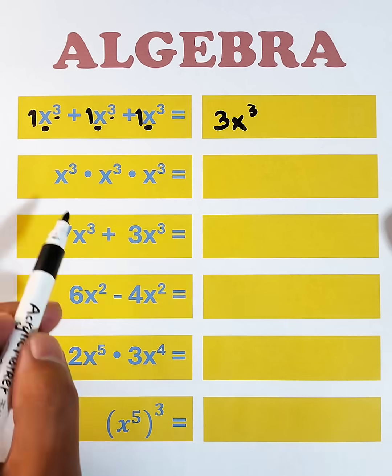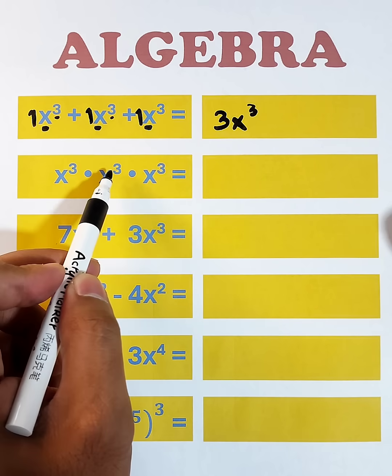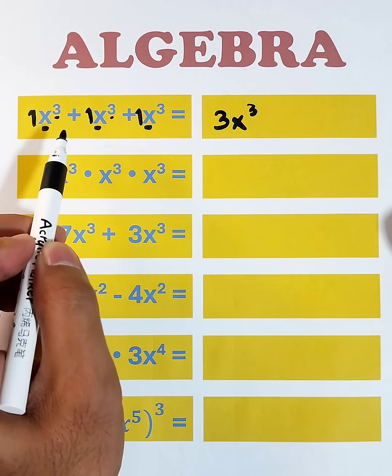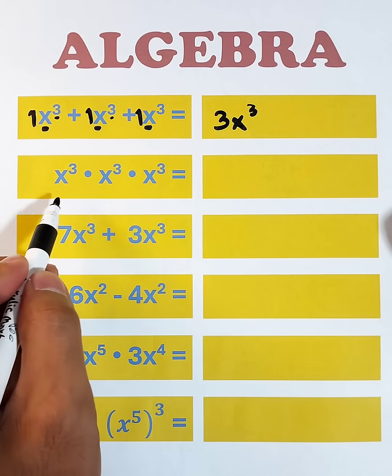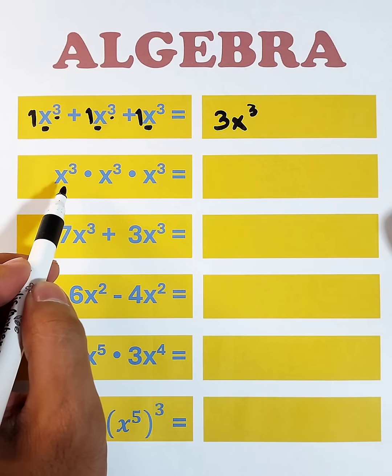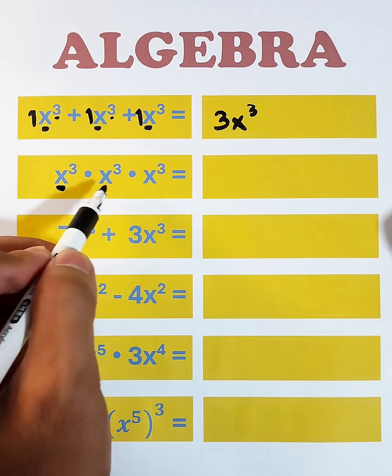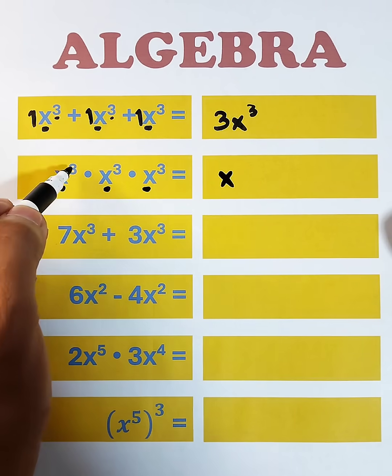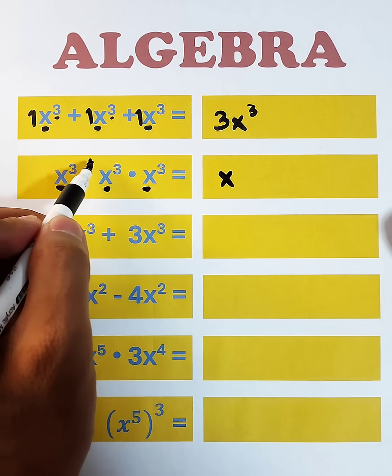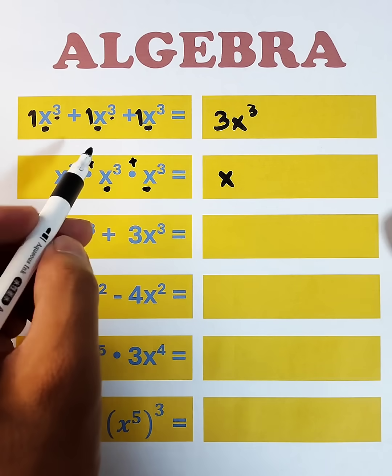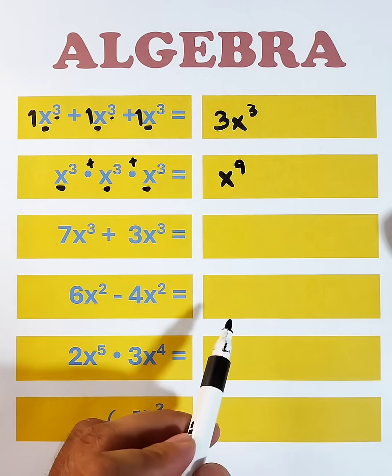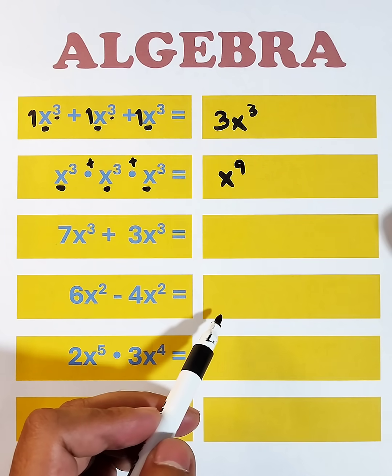Next, we have x cubed times x cubed times x cubed. This one is different from the first given example. Here, since the operation is multiplication, we will copy the same variable and then we will add exponents. We have 3 plus 3 plus 3, that would be 9. And as you can see, to simplify this expression, the answer is simply x raised to the 9th power.